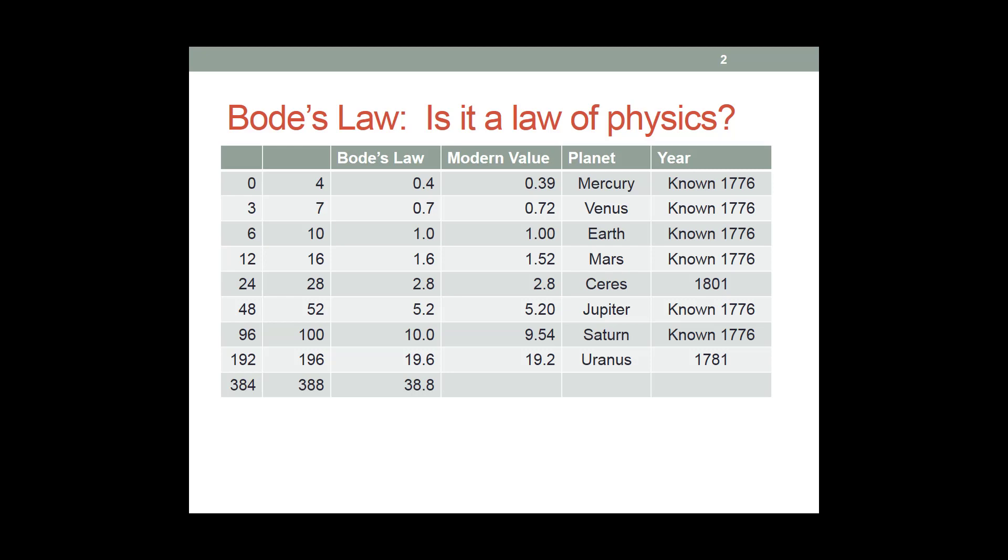So, so far, so good. This is where things kind of all fall apart, because we know that there are other planets in the solar system. Like, what's going on with Neptune?